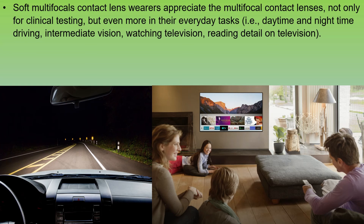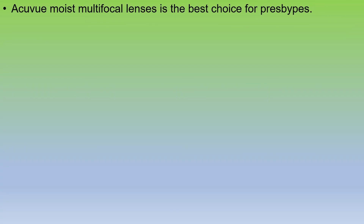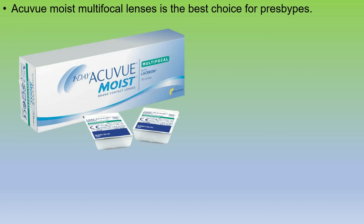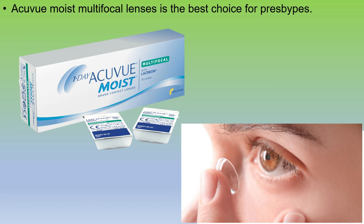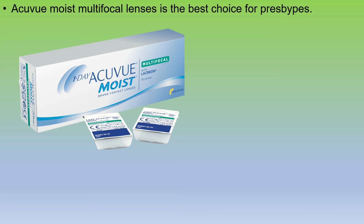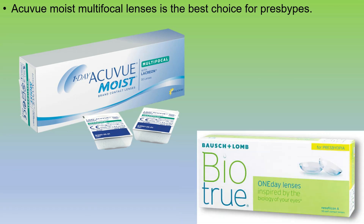Soft multifocal is not ideal for all patients and sometimes it takes more time in fitting to give best vision because the pupil size is variable from patient to patient. Nowadays, one of the best contact lenses in the one-day category is Acuvue Moist multifocal lenses. It works according to pupil size, which varies according to age. I personally recommend Acuvue Moist multifocal to my patients and it results very well. Bausch & Lomb BioTrue multifocal is also a good choice in the one-day category of contact lenses.